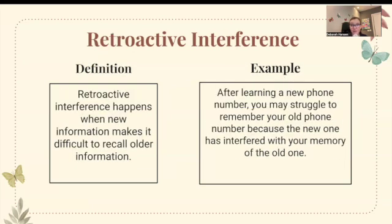Retroactive interference happens when new information makes it difficult to recall older information. For example, after learning a new phone number, you may struggle to remember your old phone number because the new one has interfered with your memory of the old one.